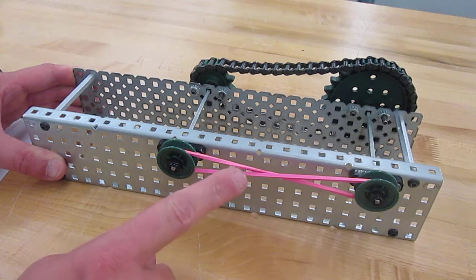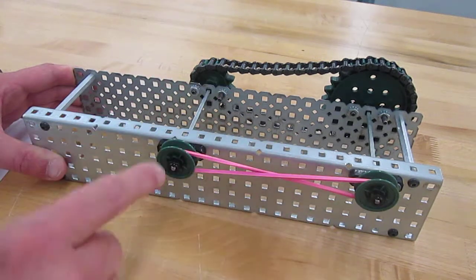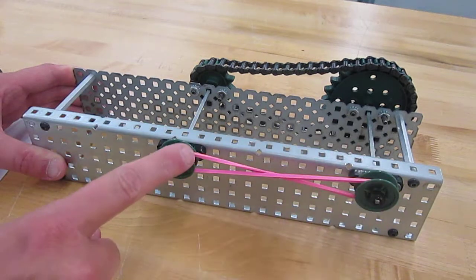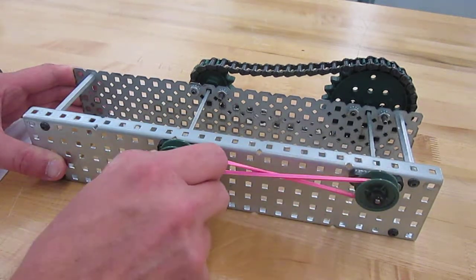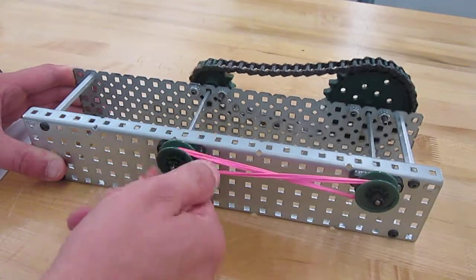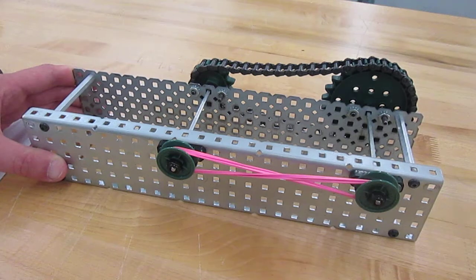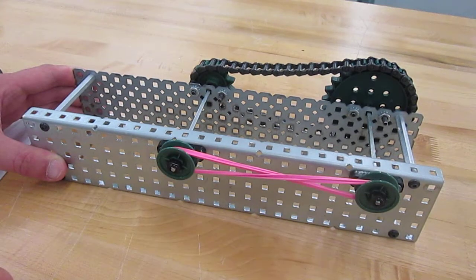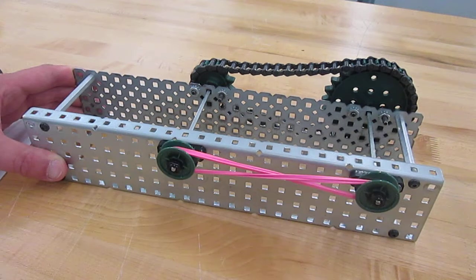So when we have the pulley rubber band wrapping around like the chain drive, both pulleys go the same direction. Now when I turn it, they are going to go opposite direction. So by doing a figure eight on the pulley band, we can then change the direction of the pulley.